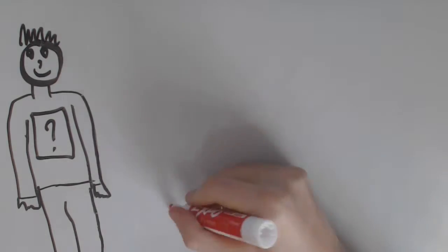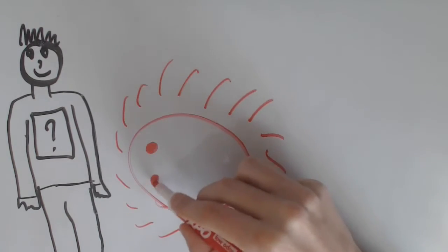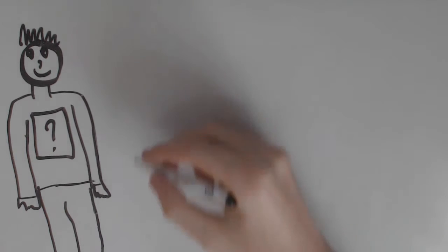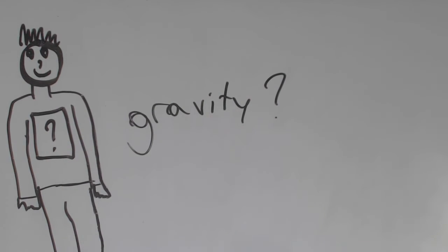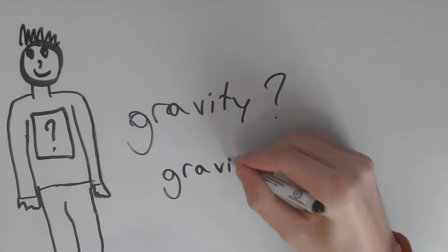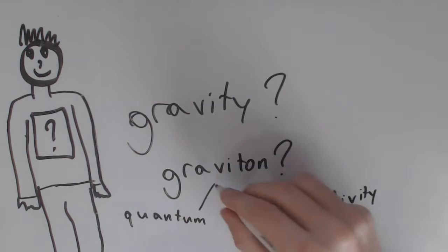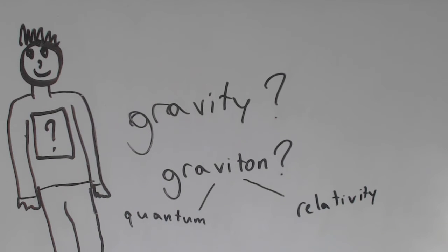The weak force is a bit more complicated, but it happens in the sun due to it playing an essential role in nuclear fusion. As for gravity, well, science still has yet to find a particle for gravity. It's what most physicists consider the missing link between quantum mechanics and Einstein's general theory of relativity, which is the theory that explains gravity.